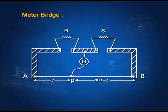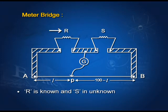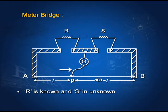Now let's study the practical application of the Wheatstone bridge, known as the meter bridge. Here, the left gap contains a known resistor R and the right gap contains an unknown resistance S. A jockey is connected at the central terminal with a galvanometer. We tap the jockey first at point A, then at point B — the galvanometer should show deflection in the opposite sides.